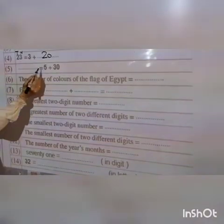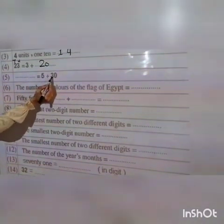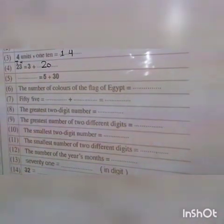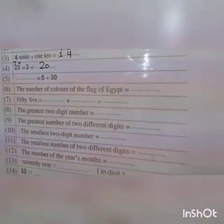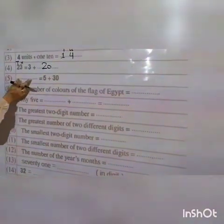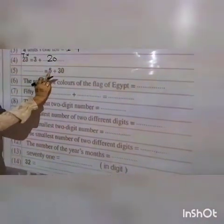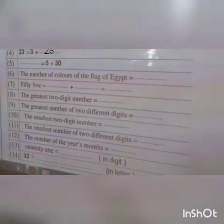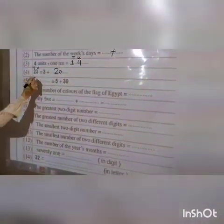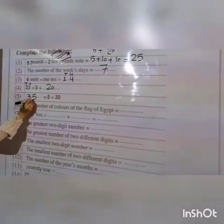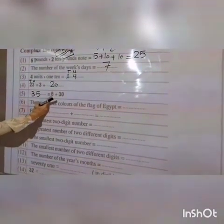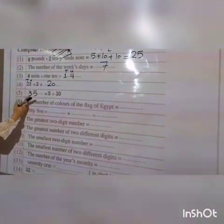Number five: dots equal five plus thirty. Can you guess the number? The number equals five plus thirty. Good job — thirty-five. Five in the units and the value of the three is thirty because three is in the tens.